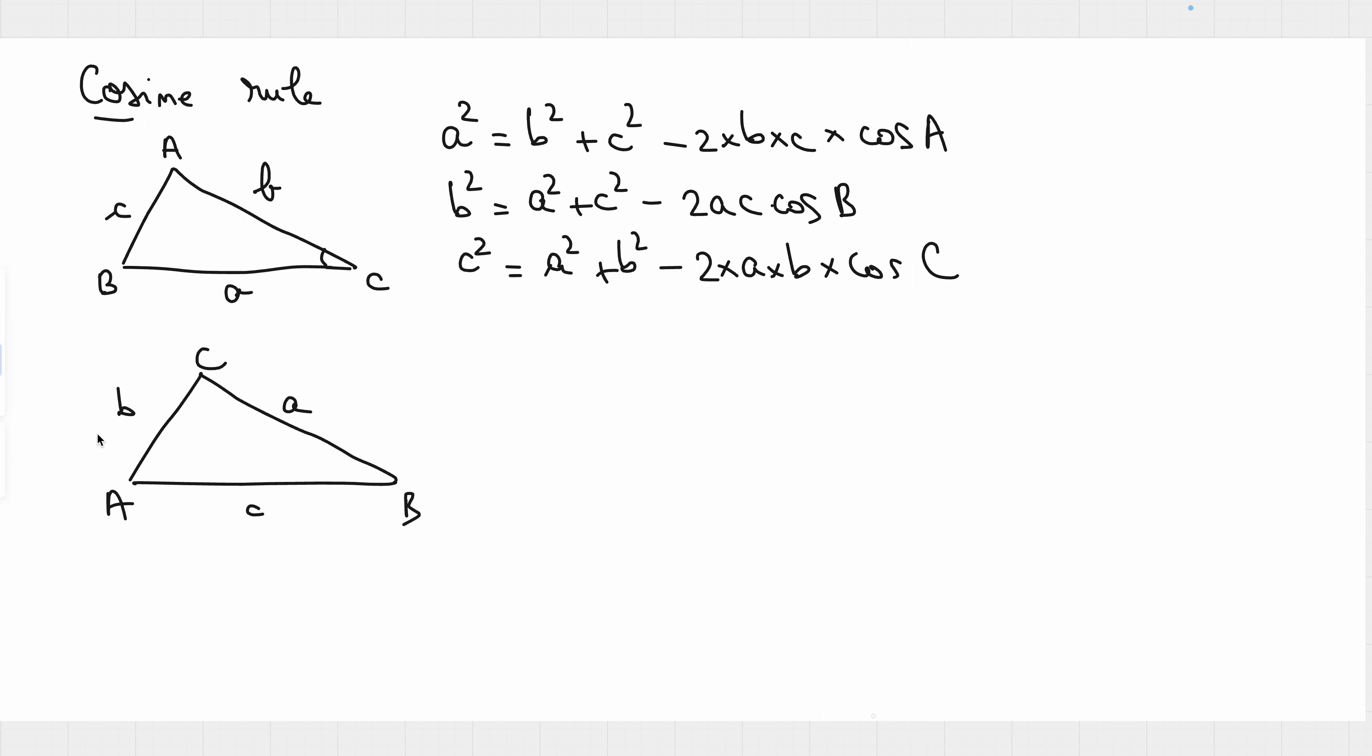We know that AC is 5 centimeters. We know that BC is 9 centimeters. And we know that C is 10 centimeters. And the question is, calculate the size of angle A to one decimal point. So, angle A equals how much? One decimal point.